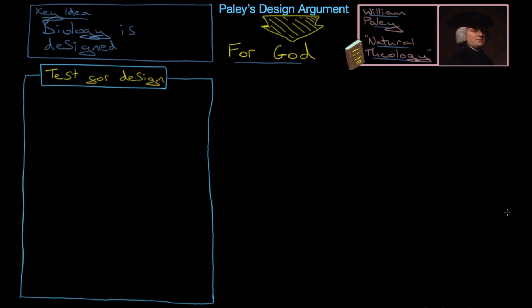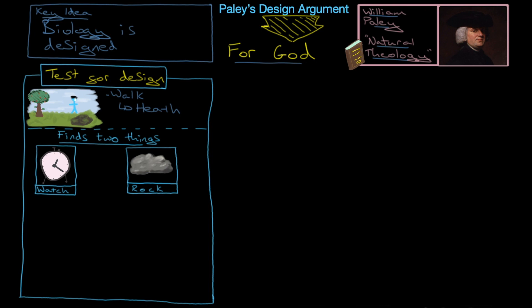He starts his analogy right at the beginning of Natural Theology by saying, imagine that I'm walking across a heath. He's going for a walk on a heath, which is kind of like a rough grassland area. Here I've drawn the usual stick man, but it's the William Paley stick man. I say proud of myself. You see the little hat and the hair? So he's walking across a heath and he discovers two things. He finds a watch and a rock.